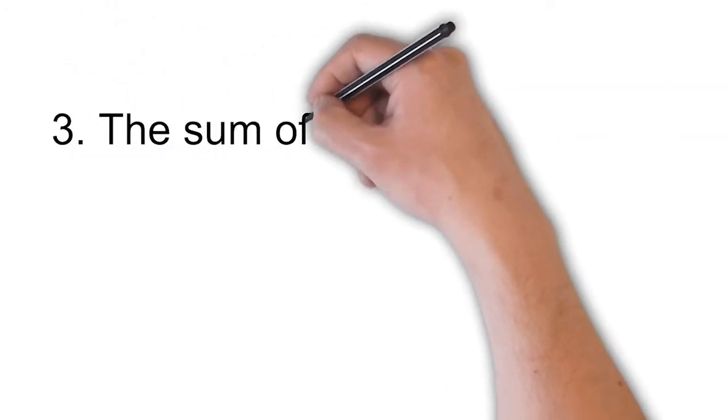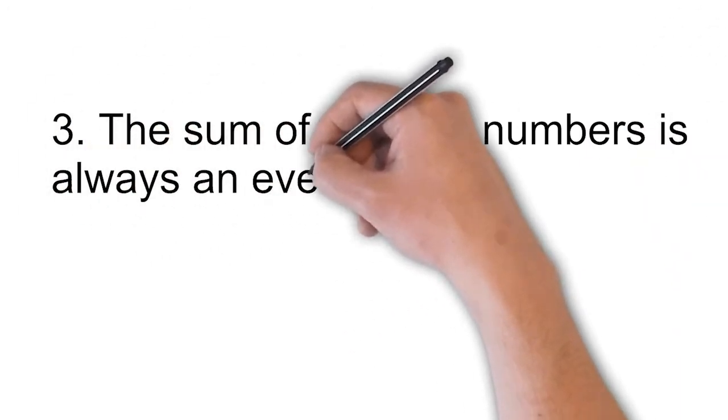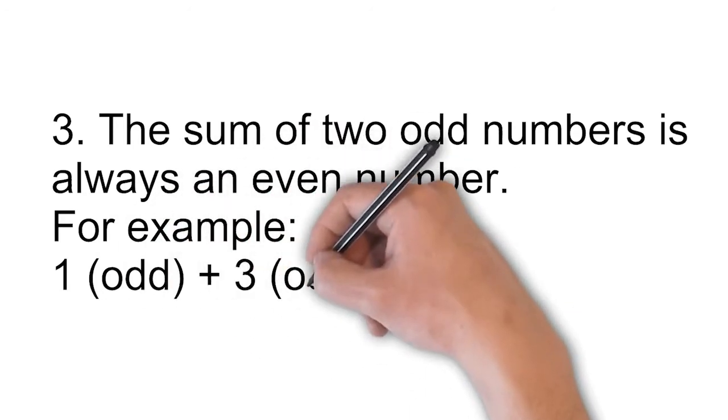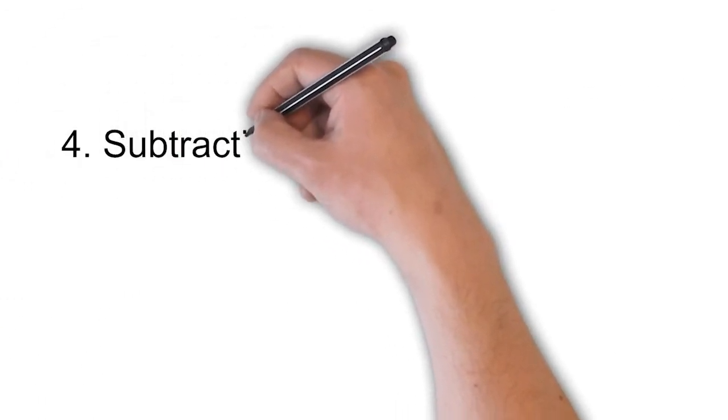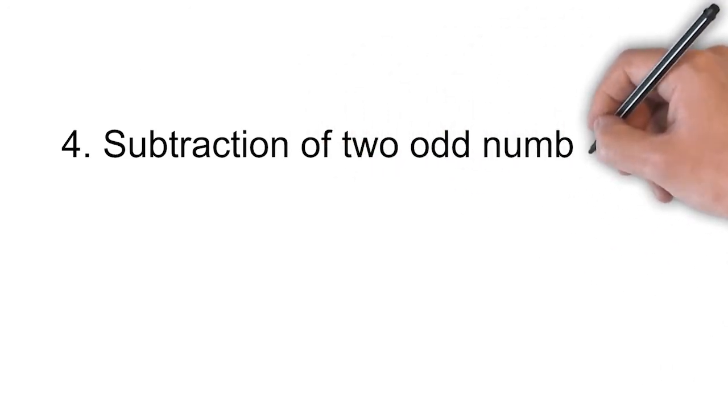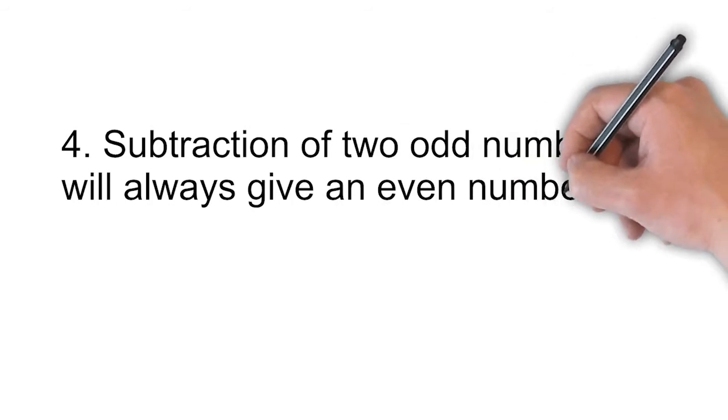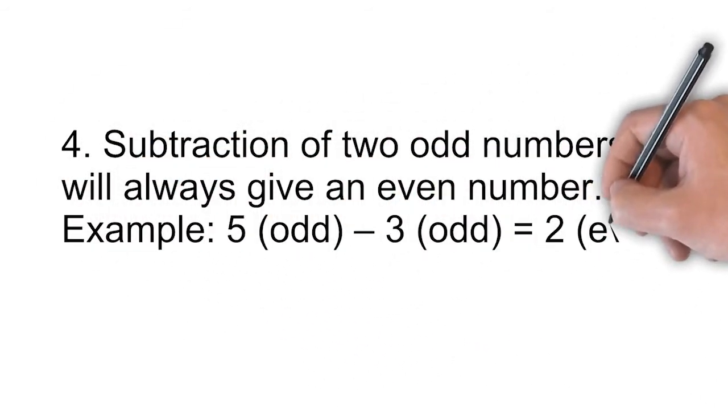The sum of two odd numbers is always an even number. For example, 1 plus 3 is equal to 4 which is an even number. Subtraction of two odd numbers will always give an even number. Example: 5 minus 3 is equal to 2 which is an even number.